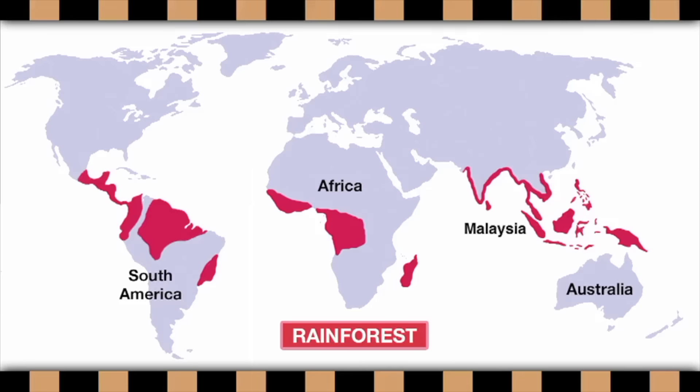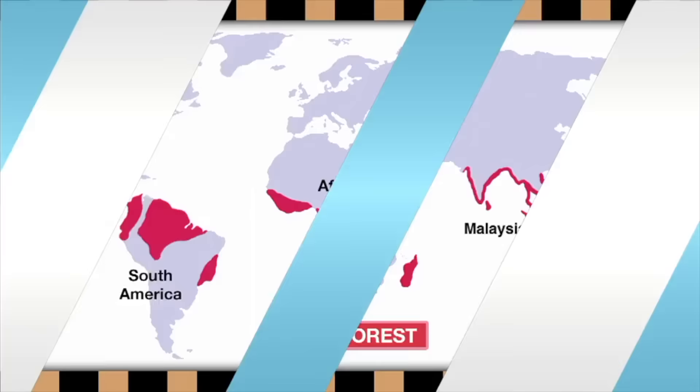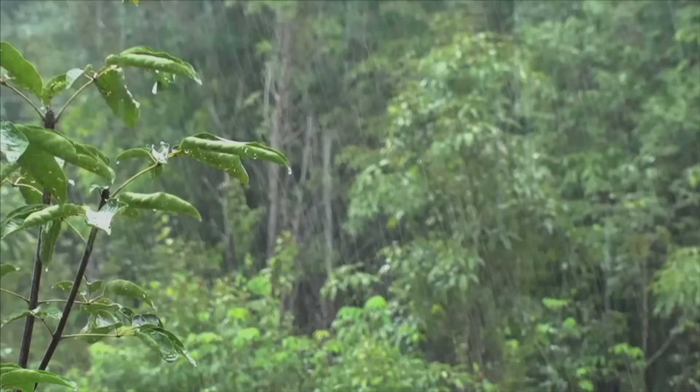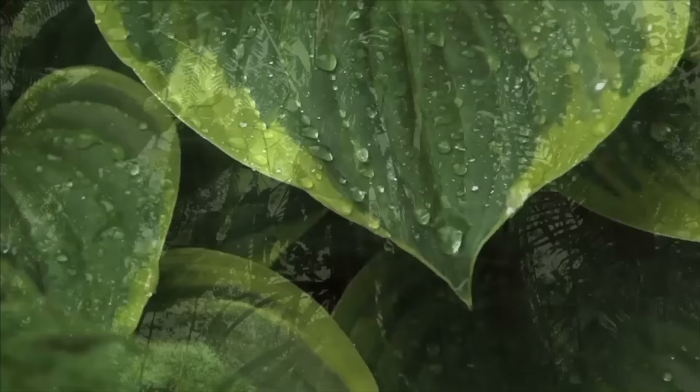The third type of forest habitat is a rainforest. Tropical rainforests are found in South America, Africa, Malaysia, and Australia. Tropical rainforests are hot and wet. The plants grow very quickly and have adapted to the large amounts of rainfall and the excessive heat. In a tropical rainforest, you'll find plants with very broad leaves and trees that grow tall above the shrubs and vines.